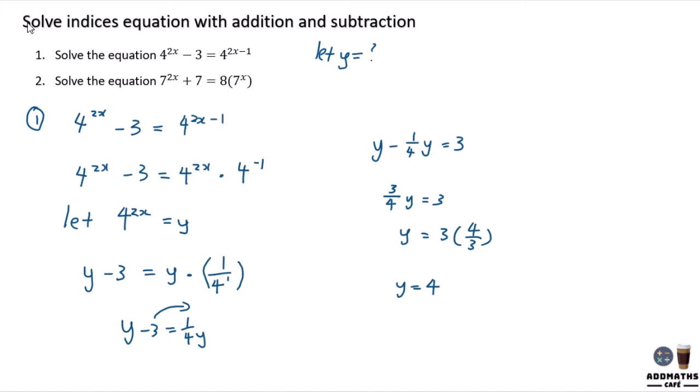So y is your 4^(2x). And in this case, you know 4 is 4 to the power of 1. These two indices have the same base, so you can use the power to compare. And at the end of the result, you will get the answer for x is 1/2.